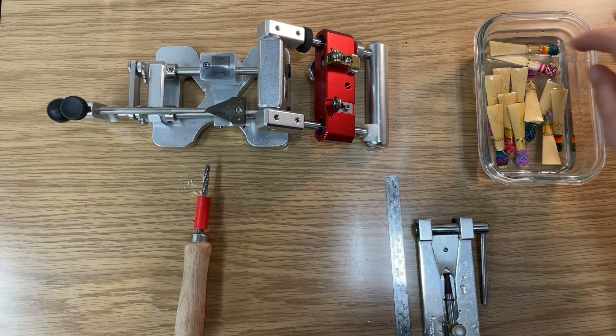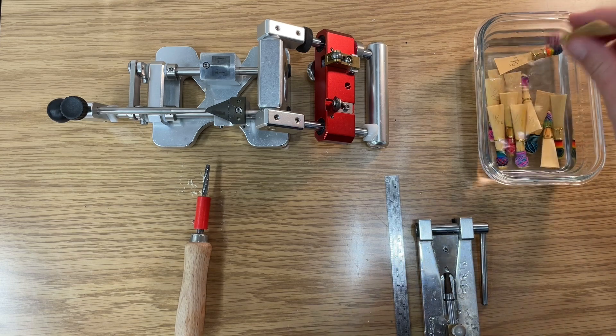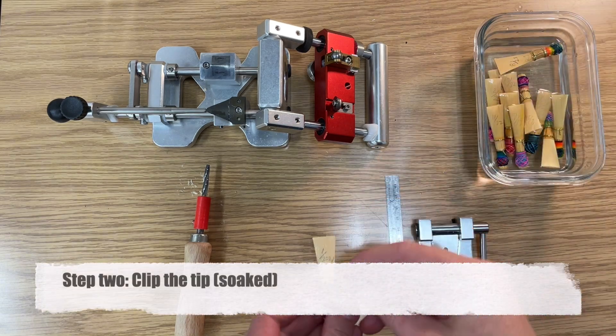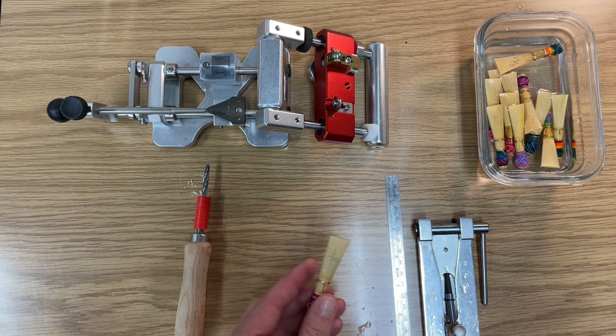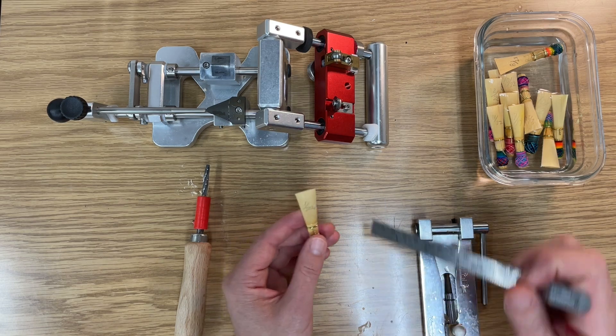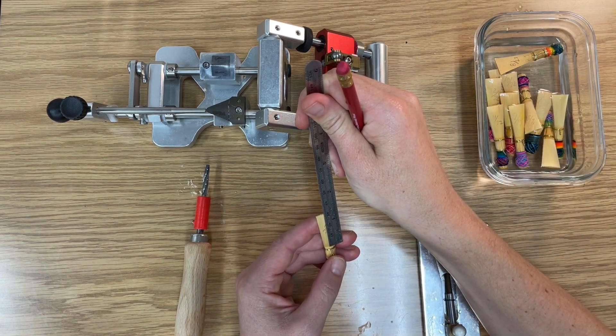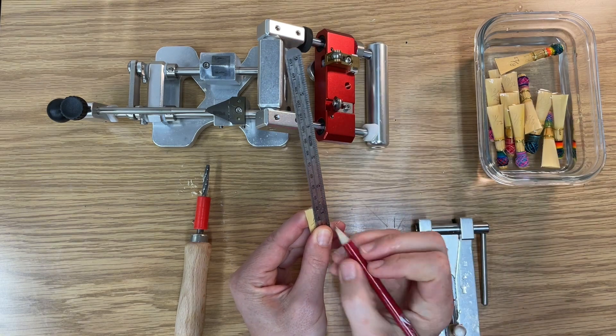Now they've soaked for about three to five minutes or a little longer, and what we're going to do is measure from the collar. I like to do 28 millimeters because I know that my reeds will play more in tune at 28, although you can do 29 if you think they might be a little sharp.